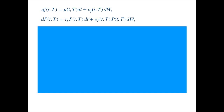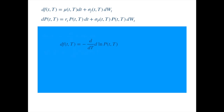We saw in the previous video that we can write the instantaneous forward as a function of the zero coupon. We need to find a way to infer the dynamics of the instantaneous forward from the dynamics of the zero coupon. We are interested in the differential, so let's apply the differential to both sides, where we assume that we can interchange the derivative and the differential. This is going to be legitimate for the cases we are considering here.